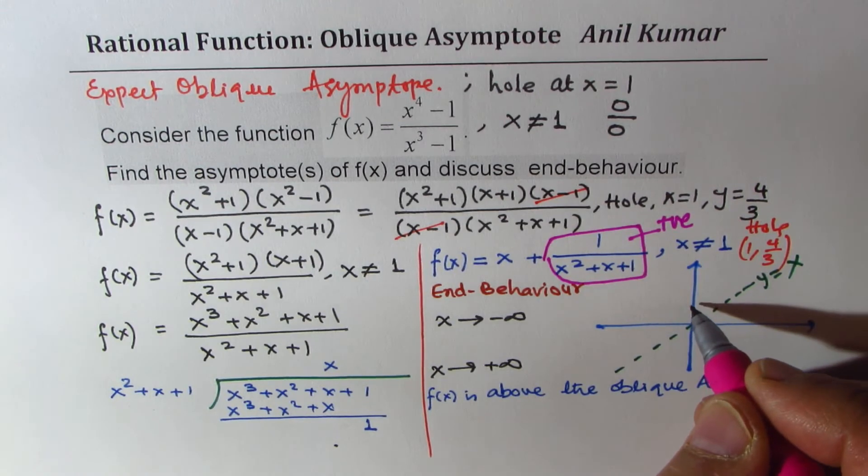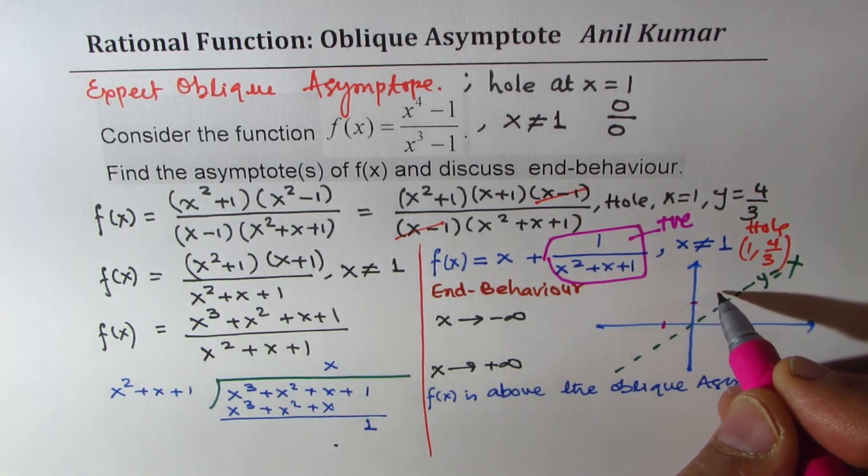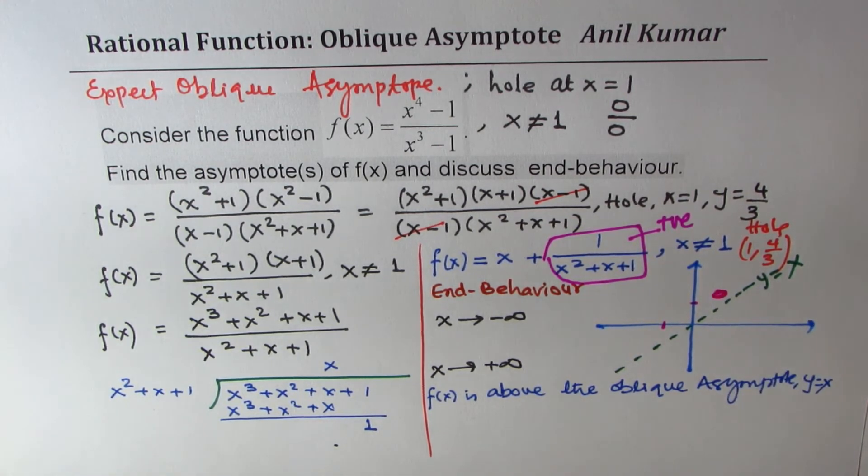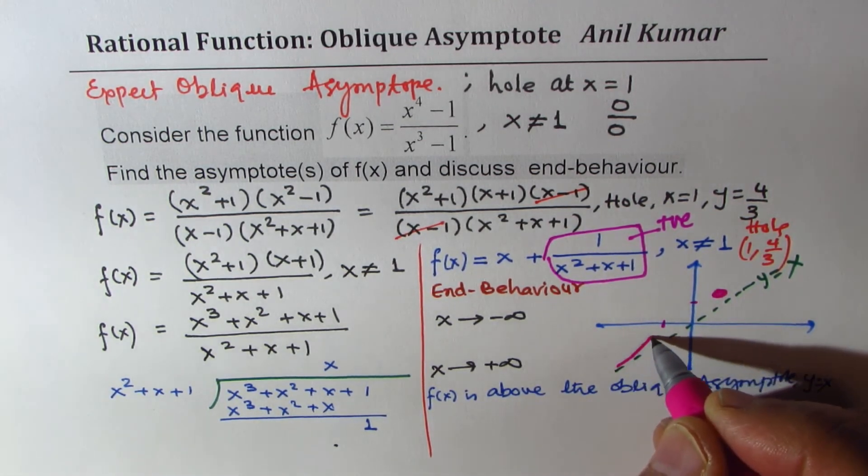And we do have a hole, right? So this is 1, this is minus 1. So we do have a hole somewhere. This is a hole, right? So the function will be above the line means it is going to be like this.